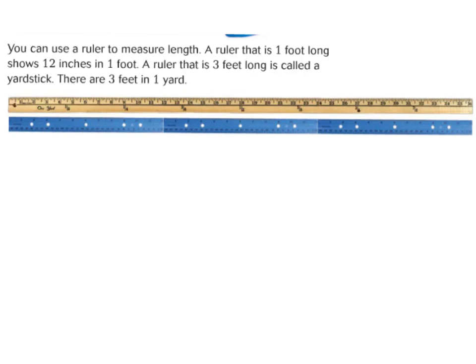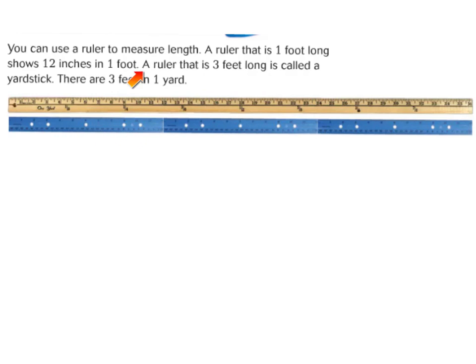Two very important tools that you will need to know with measurement are the yardstick and the ruler. The yardstick measures 36 inches, also known as 3 feet long. The ruler is 12 inches and it measures 1 foot. You can use a ruler to measure length. A ruler that is 1 foot long shows 12 inches in 1 foot. Do you see this ruler right here? It equals 12 whole inches.